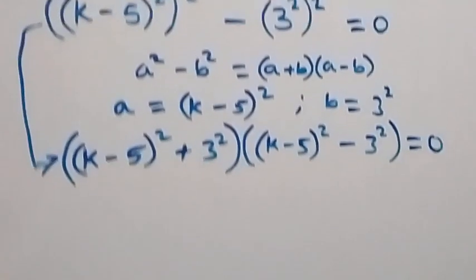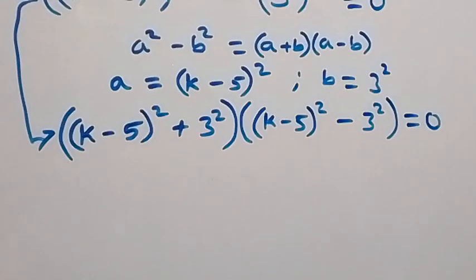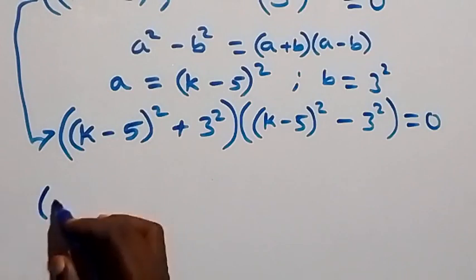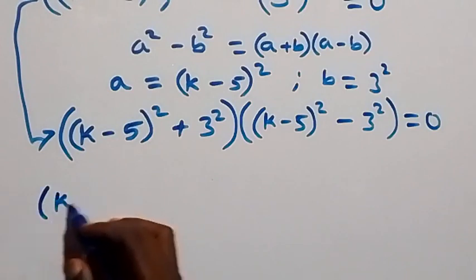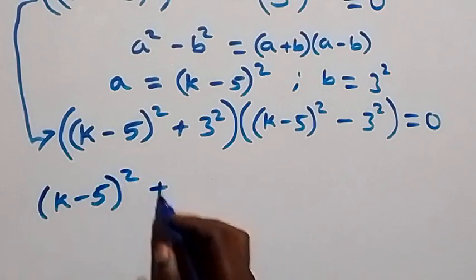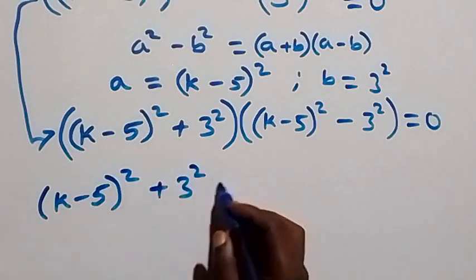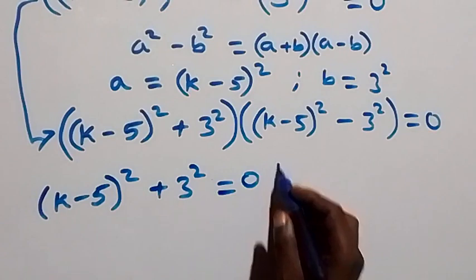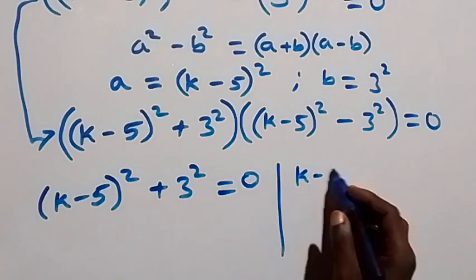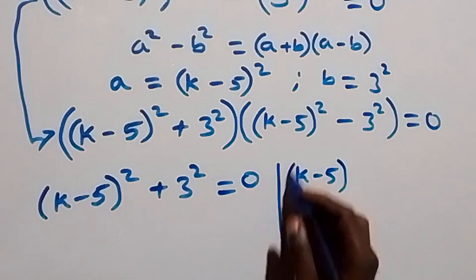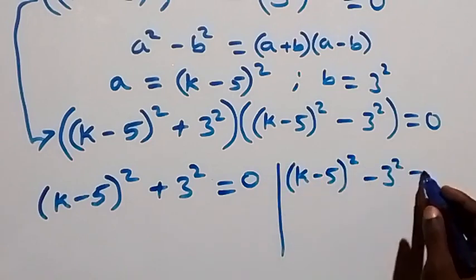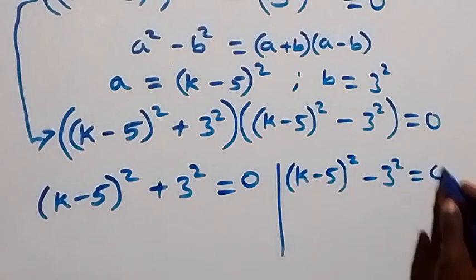This implies we have 2 cases. The first one: k minus 5 squared plus 3 squared equals to 0. Or we have k minus 5 squared minus 3 squared equals to 0.